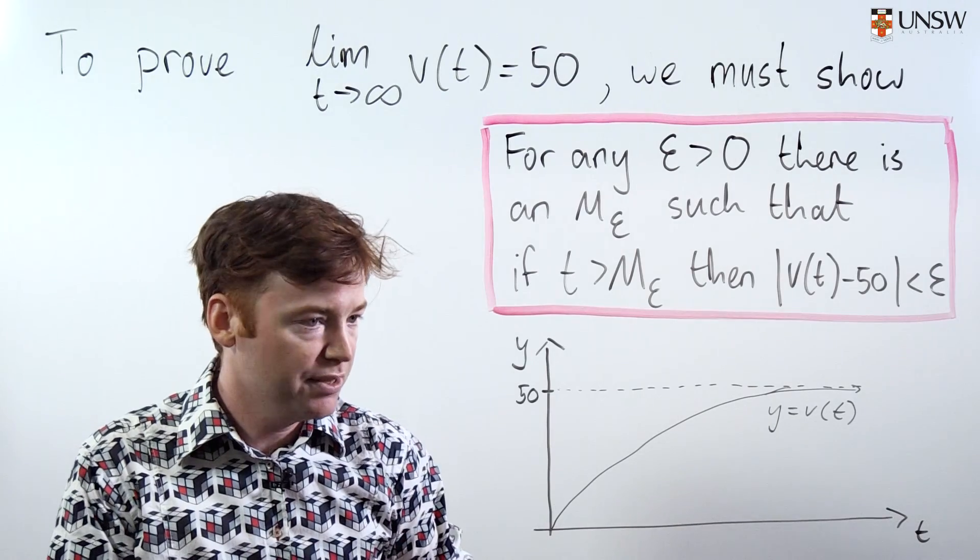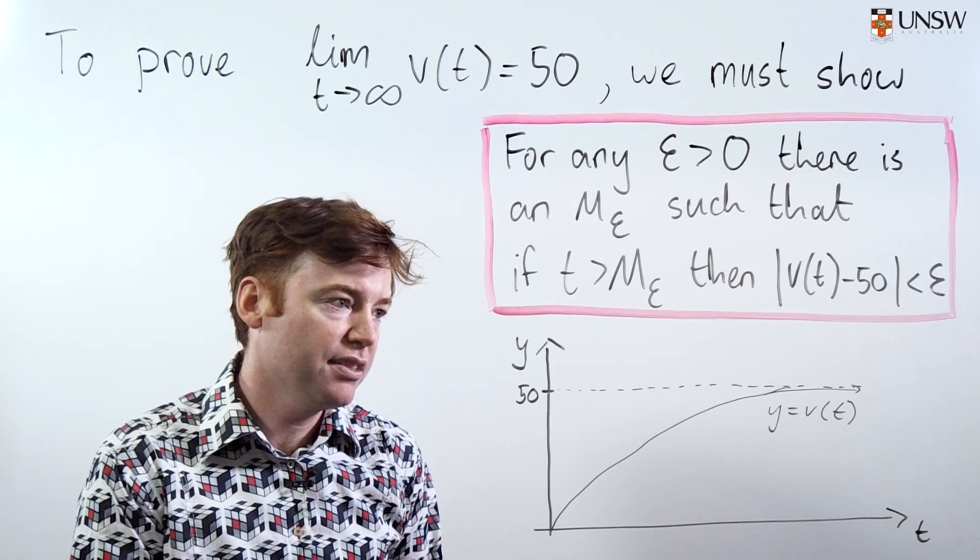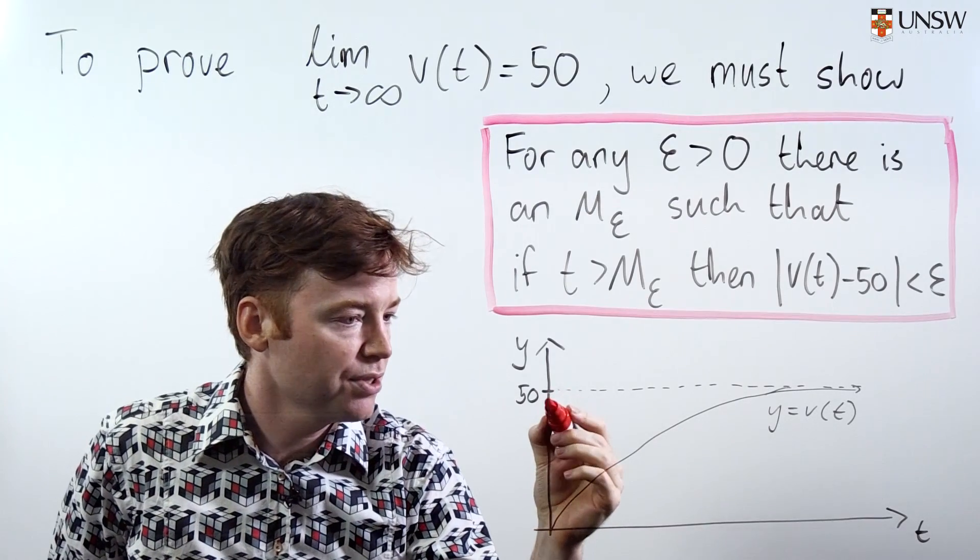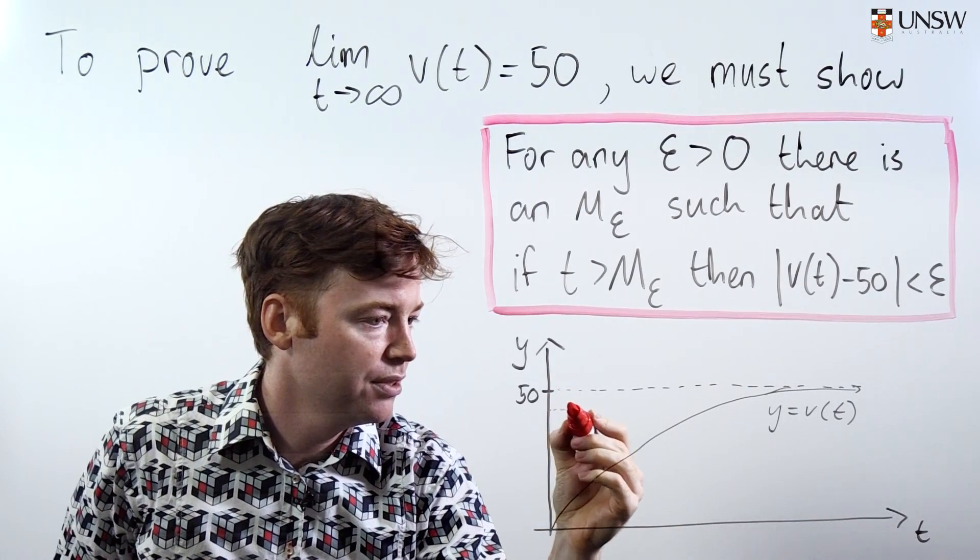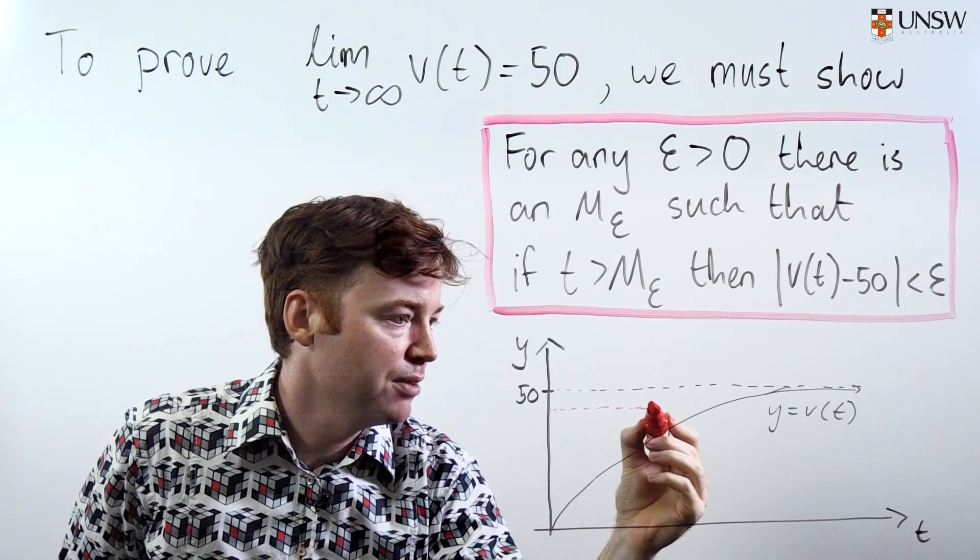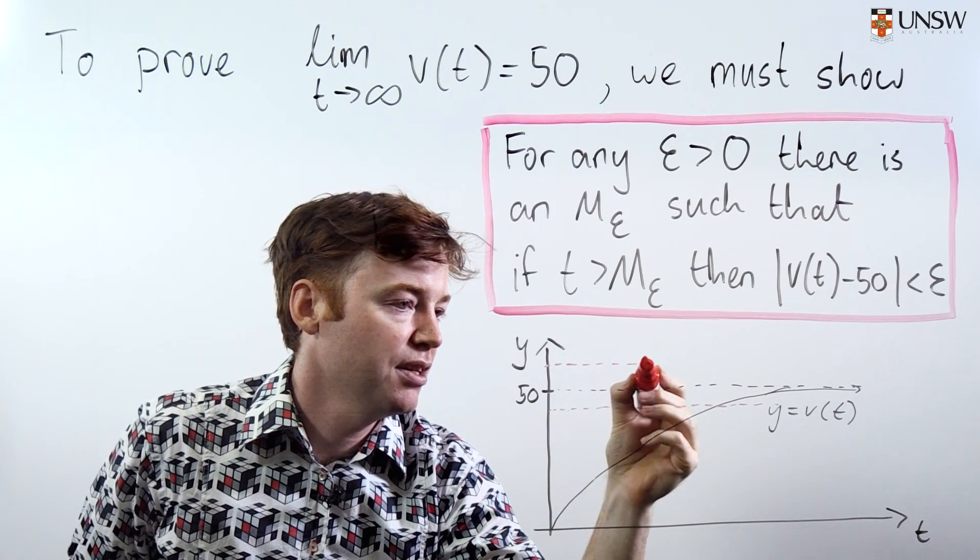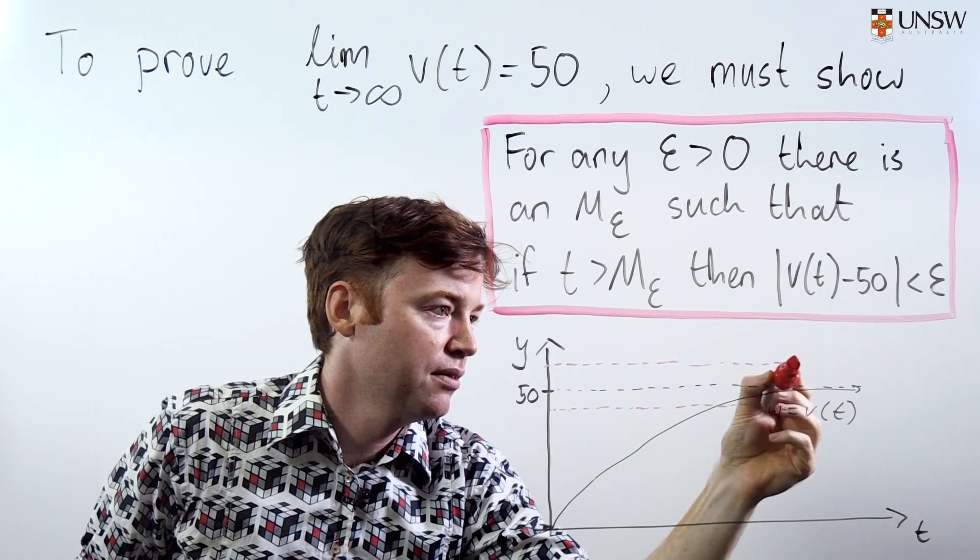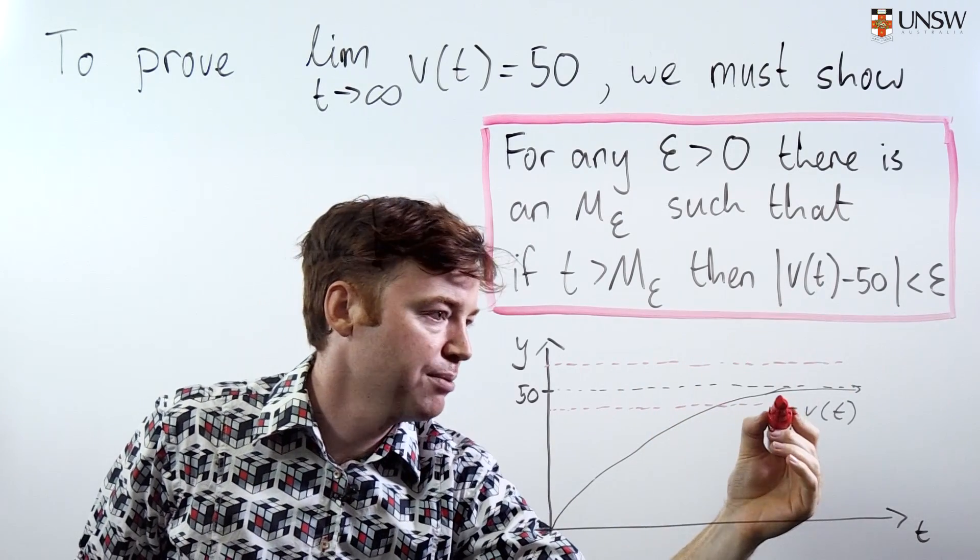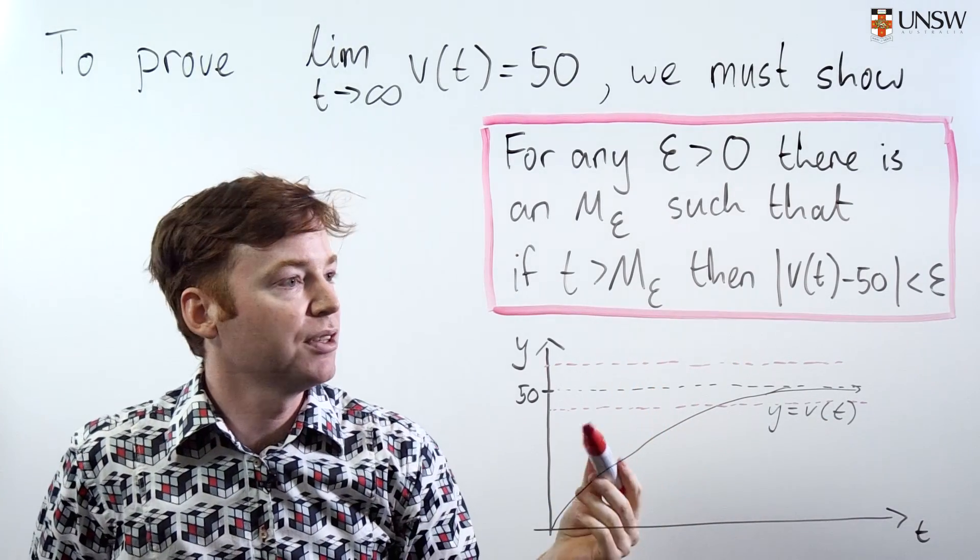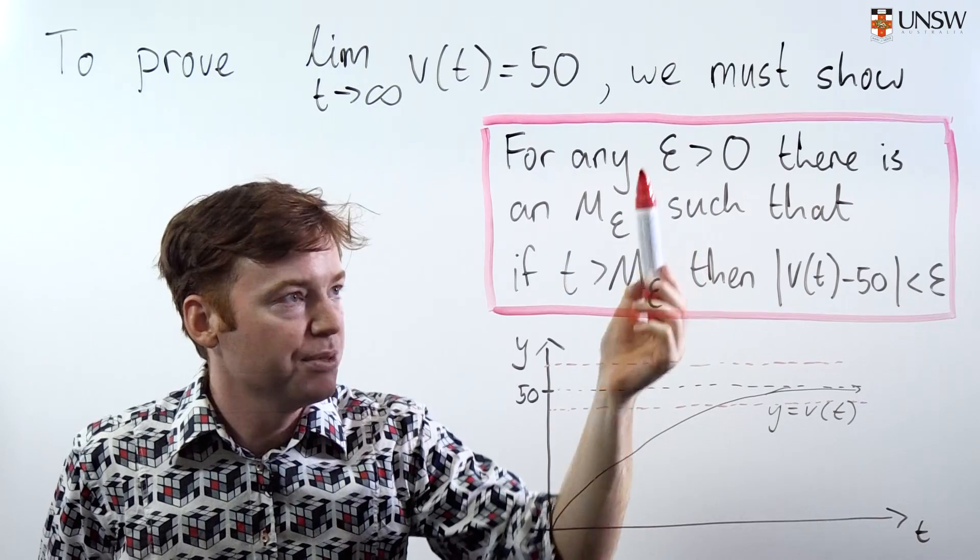And this roughly matches with our intuition about what it means for a function to have a limit at infinity. But formally, what it means is this. You take some epsilon greater than zero, and you create an epsilon sausage about the limit. So here's my 50 minus epsilon line. Here's my 50 plus epsilon line. Epsilon can be anything, but typically, you can think of epsilon as being small.